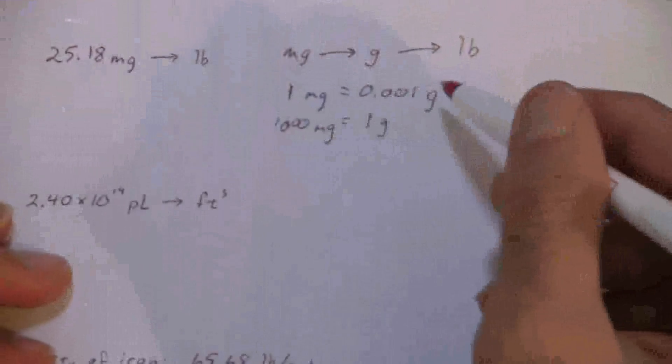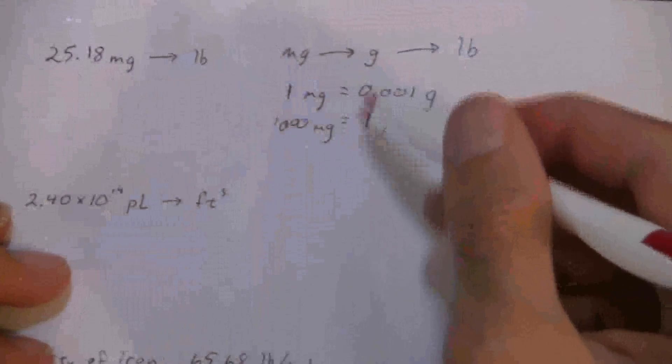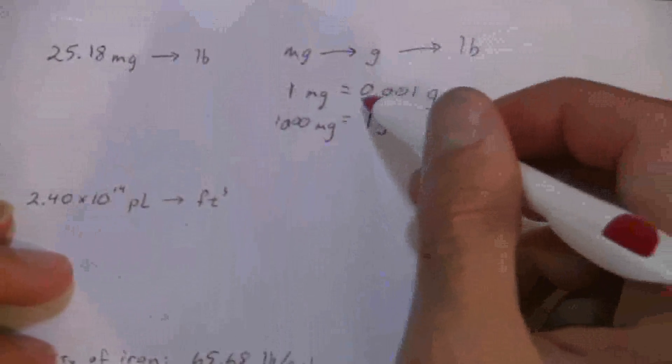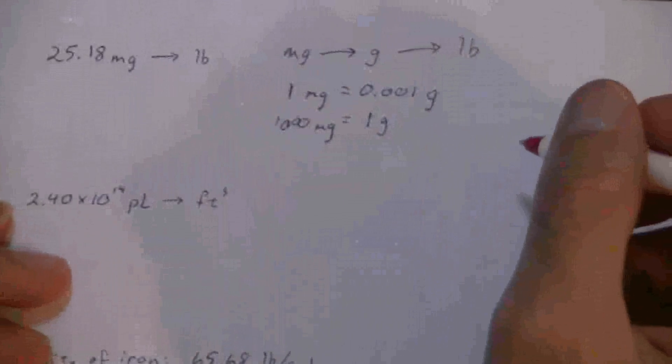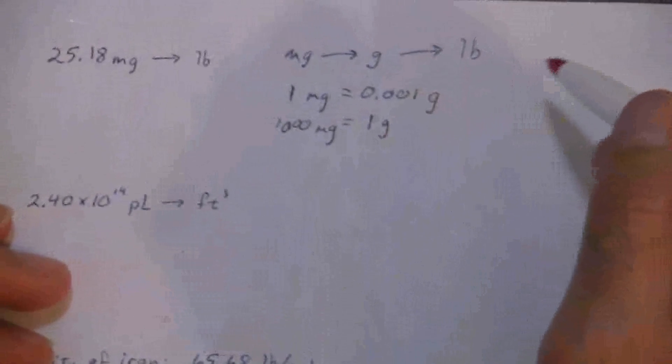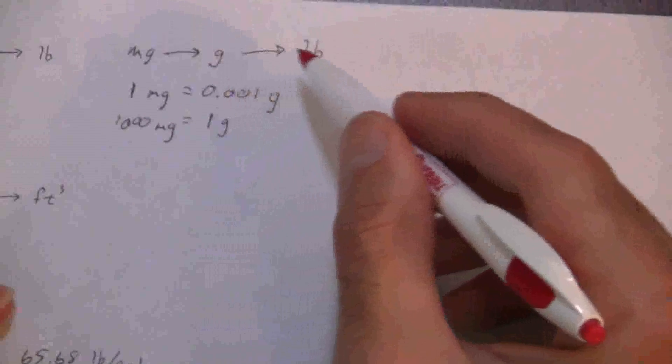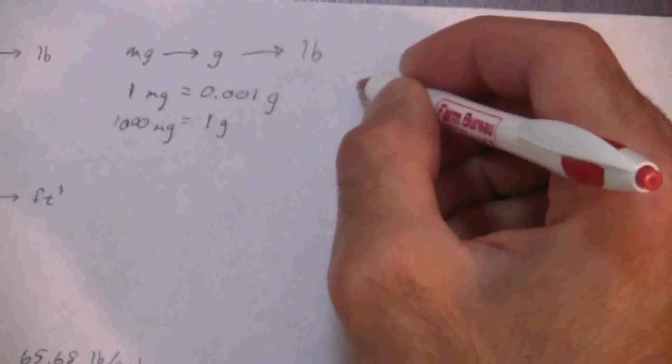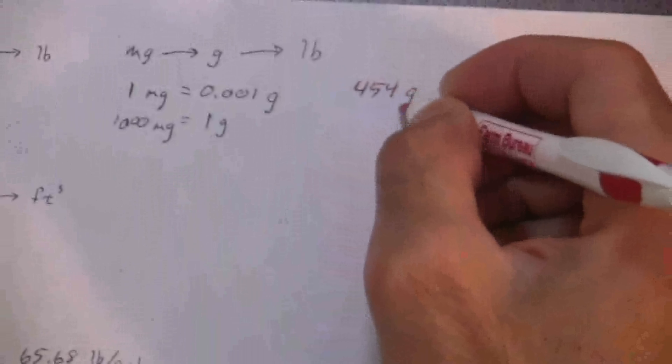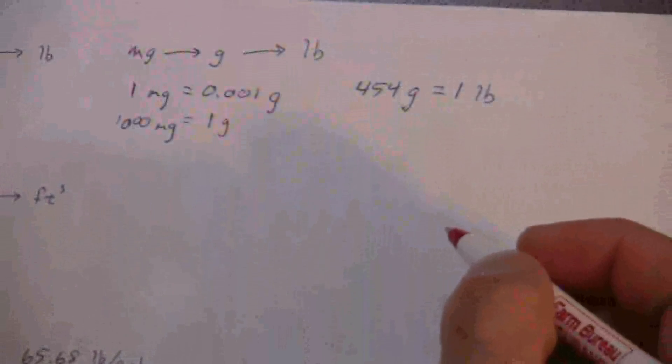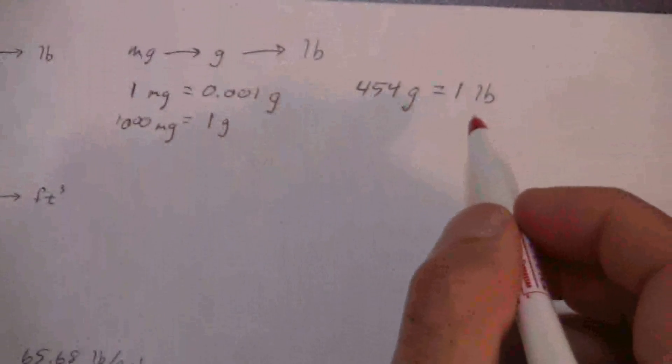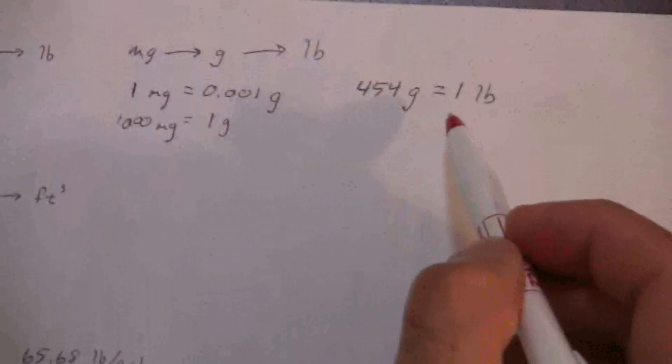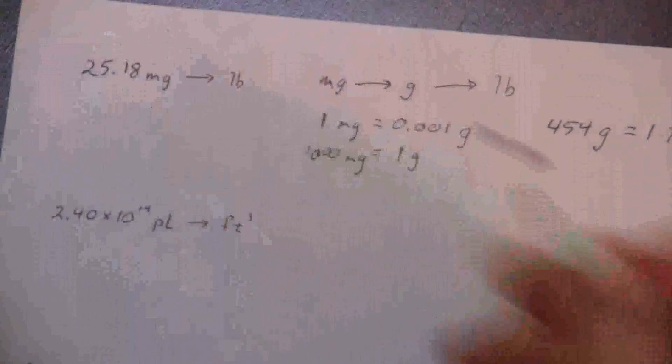Okay, so it doesn't matter which way I write it, whether I say there's a thousand milligrams in a gram or 0.001 grams in a milligram. It'll give us the same result and we'll see that in just a second. Okay, so the other conversion factor is grams to pounds. Now this isn't one that you would need to have memorized, but you can look that up in a reference table and you'll find that there are 454 grams to one pound.